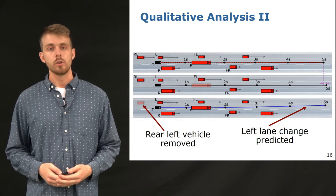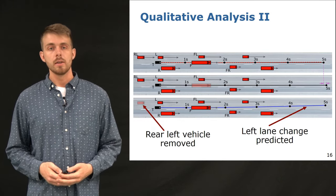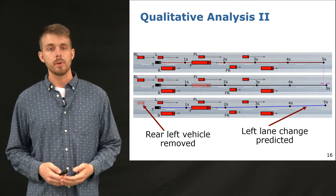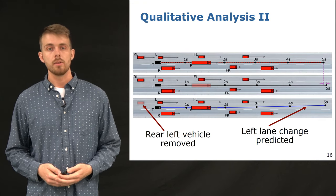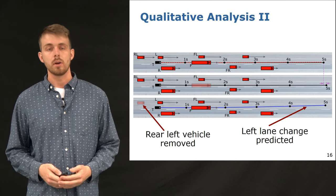If the rear left vehicle is removed from the input representation, the target vehicle can make a left lane change, as soon as the car on the left has passed by, as predicted by our method.